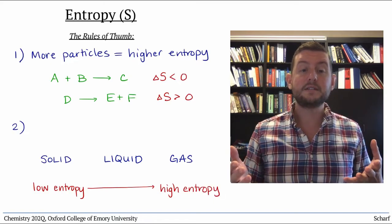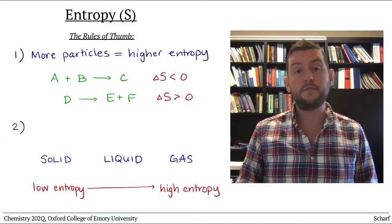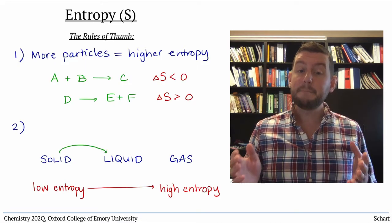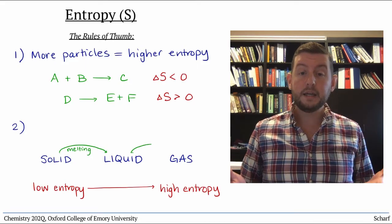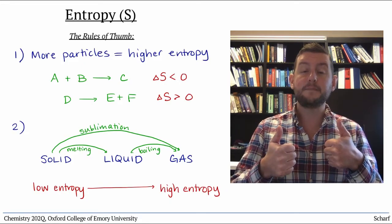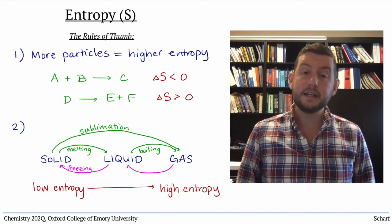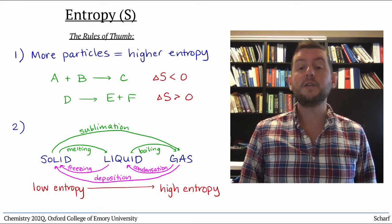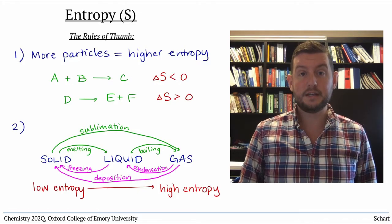This means that melting, boiling, and sublimation all involve increases in entropy, while freezing, condensation, and deposition all involve decreases in entropy.